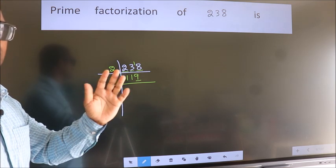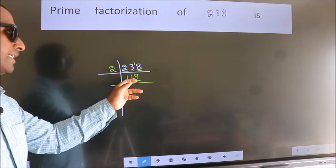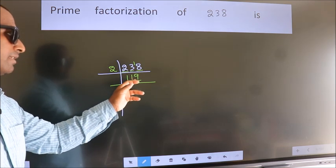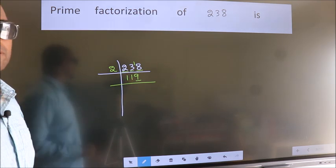Next prime number 5. Last digit is neither 0 nor 5, so this number is not divisible by 5.